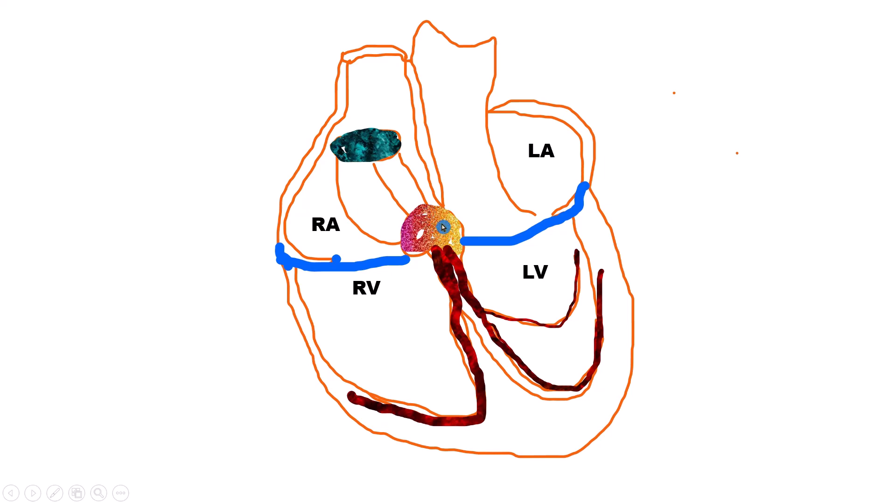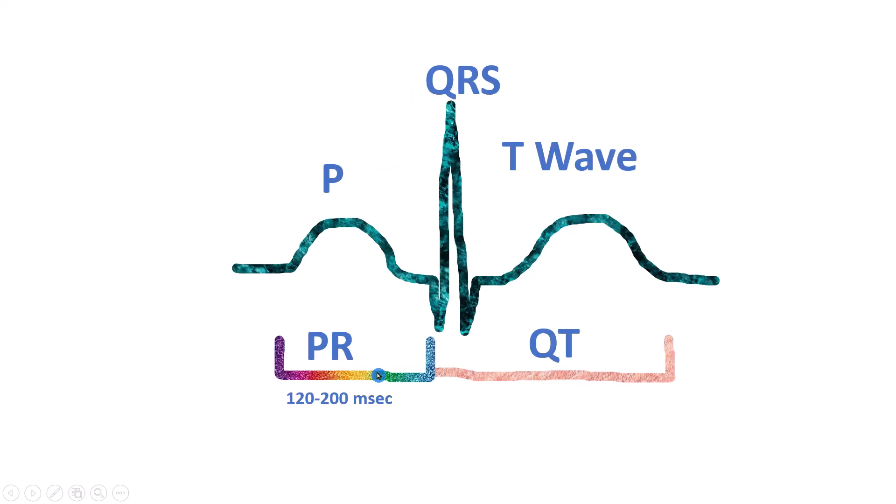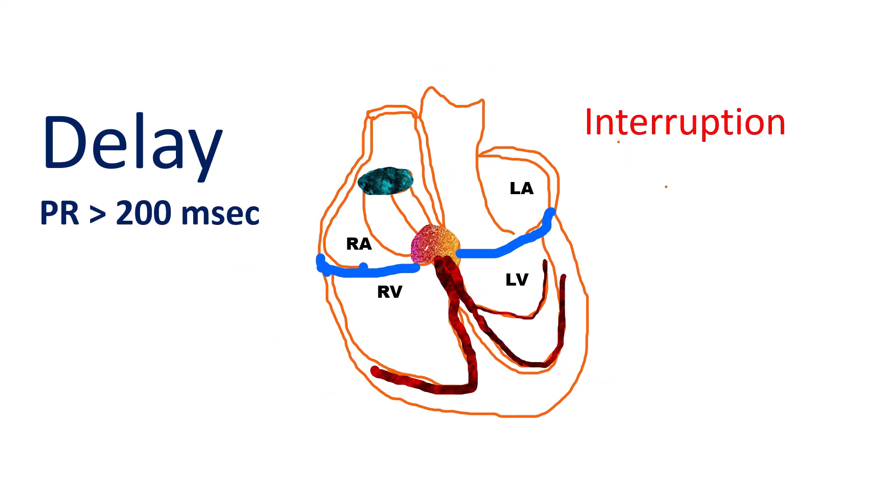There is a physiologic delay of approximately 120 milliseconds to 200 milliseconds between atrial and ventricular activation, represented by the PR interval. This delay allows the ventricles optimal time to fill with blood during and just after atrial contraction. Excessive slowing or actual interruption of electrical signal propagation across the heart's conduction system is termed atrioventricular block or heart block.